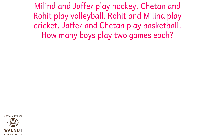Next question: Milind and Jafar play hockey. Chetan and Rohit play volleyball. Rohit and Milind play cricket. Jafar and Chetan play basketball. How many boys play two games each? Let's draw a table and write the names — M for Milind, J for Jafar — and the games on the left. Now let's tick what comes for hockey. Who plays hockey? Milind and Jafar, so let's put a tick for M and J under hockey.